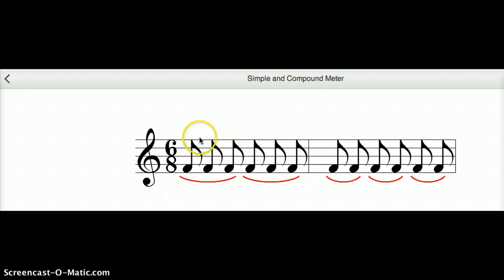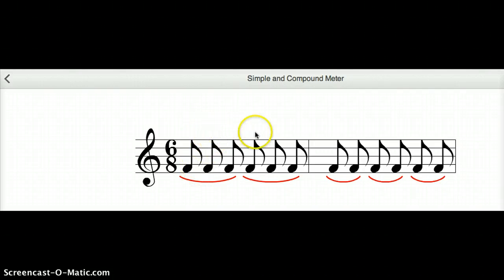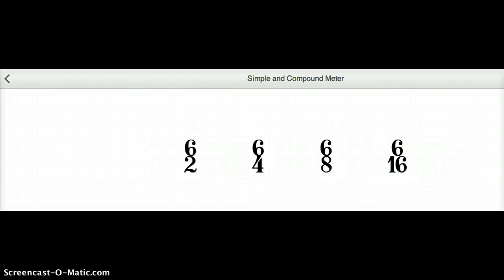And as you can see, one, two—there are two big beats in a 6/8 bar, so that would be compound duple. Here are some more compound duple meters.